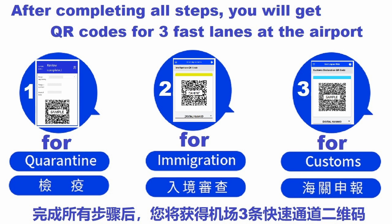After you go through all those steps, you will get FastTrack QR codes — three of them. The first one is a blue quarantine QR code. The second one is a yellow immigration QR code. The third one is a blue customs QR code.